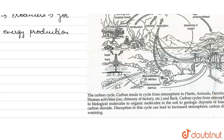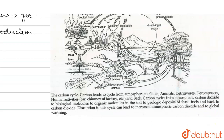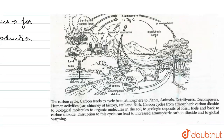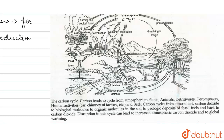We have explained the carbon cycle through a diagram and flow chart. Carbon cycles from the atmosphere to plants, and comes back to the atmosphere. Plants, animals, detritivores, decomposers, and human activities all add carbon dioxide to the atmosphere. The carbon cycle goes from atmospheric carbon dioxide to biological molecules, to organic molecules in the soil, to geologic deposits of fossil fuels, and back to carbon dioxide.